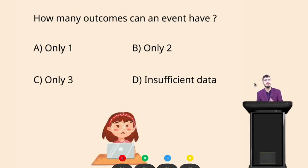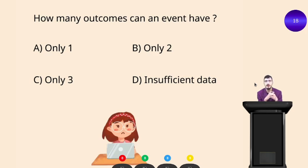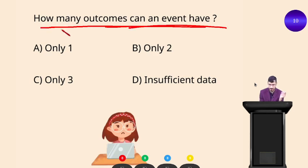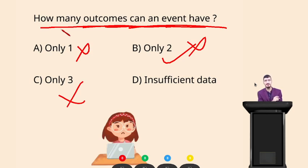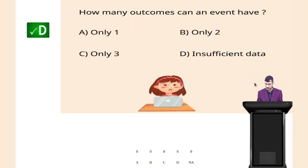Question time: how many outcomes can an event have? Options — A: only one; B: only two; C: only three; D: insufficient data. I'm giving you 30 seconds. Time's up — an event can have no outcomes, several outcomes, or a limited number of outcomes, so we cannot fix the number. Option D, insufficient data, is the right answer.